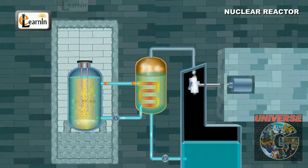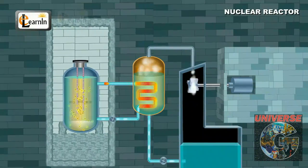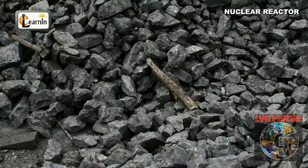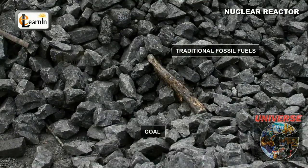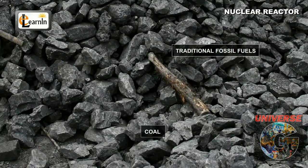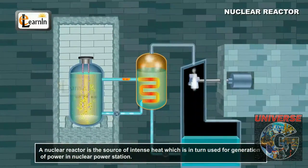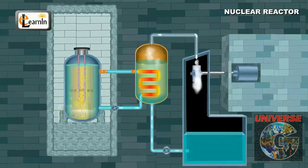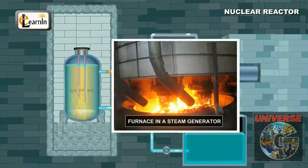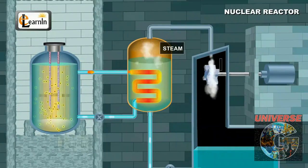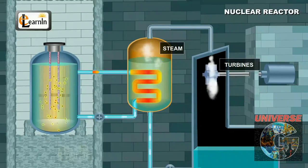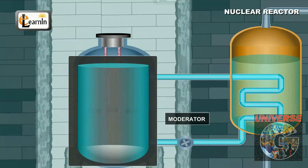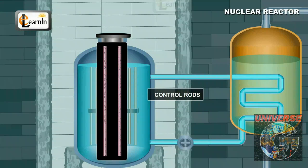Nuclear reactor. In this video, we're going to learn about the nuclear reactor. Nuclear reactors are the modern day devices used for power generation as traditional fossil fuels like coal are at the breach of extinction. A nuclear reactor is the source of intense heat which is in turn used for generation of power in nuclear power stations. A nuclear reactor consists of three crucial components: fuel elements, moderator, and control rods.